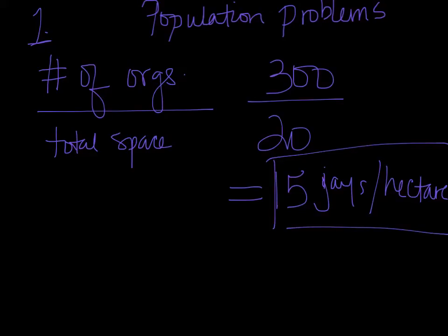Now what happens if they give you a two-part space, in the sense that they say the space is 6 by 12, or 3 by 4, or 2 by 8? Remember, you're always trying to come up with total space — that's the key variable in this equation. So you would multiply those dimensions out to find the total space, and then take the number of organisms and divide it by that total space you just calculated. That's how you handle any question that deals with density.